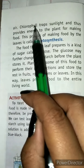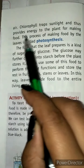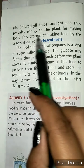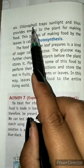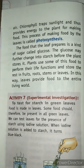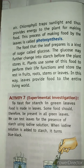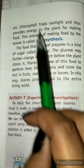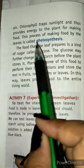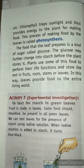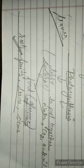Chlorophyll traps sunlight and provides energy to the plant for making food. This process of making food by the leaves is called photosynthesis. Just as we need energy to cook our food, plants also need energy, which comes from chlorophyll.